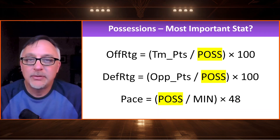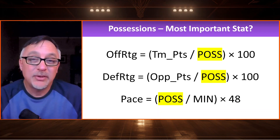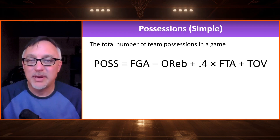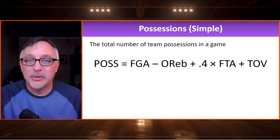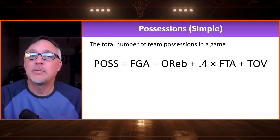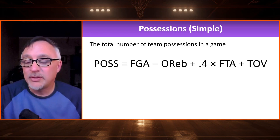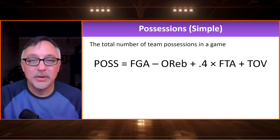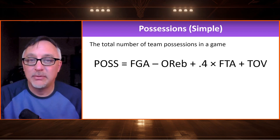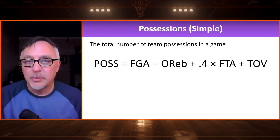When we look at offensive rating, defensive rating, and pace, possessions are embedded in each of these stats. Is the number of possessions the most important stat? Maybe it is. Possessions are not necessarily easy to calculate, so I'm going to use a formula. Here is the first formula. What ends a possession? We have a field goal attempt — either it goes in or it's a miss. We take field goal attempts and subtract offensive rebounds, because an offensive rebound only extends one possession rather than creating a new one. Then free throw attempts, with some portion ending possessions, so we take 0.4 of that. And finally, a turnover ends the current possession.